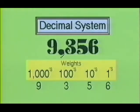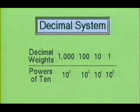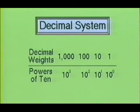The multipliers in this case — the 1,000, the 100, the 10, and 1 — are referred to as weights. Notice that these weights are all powers of 10. For example, 10 to the 1st power is 10; 10 to the 2nd power, or 10 times 10, is 100; and 10 to the 3rd power, or 10 times 10 times 10, is 1,000.